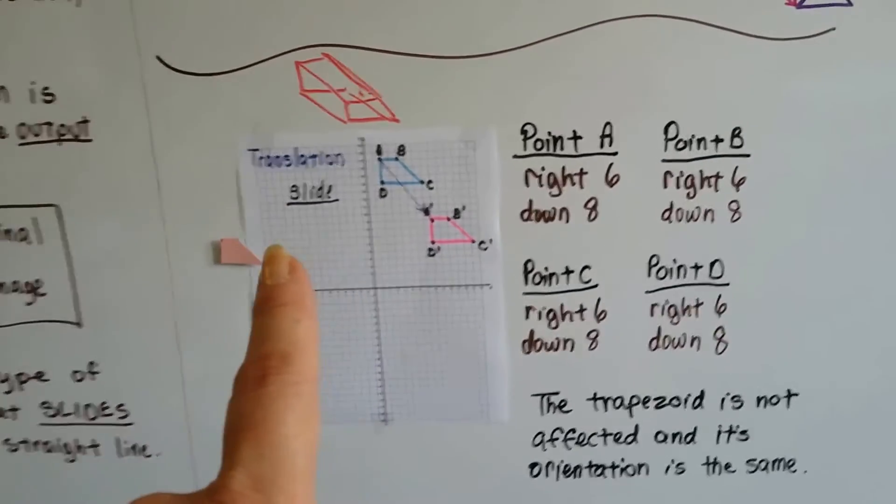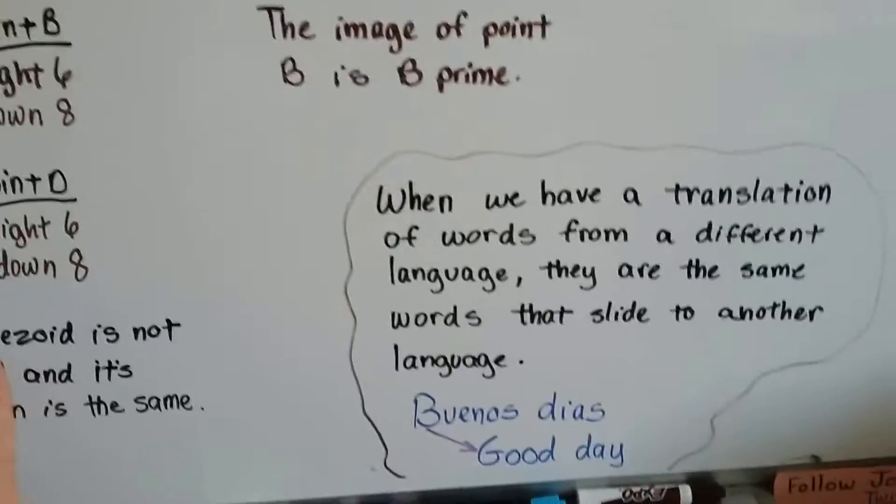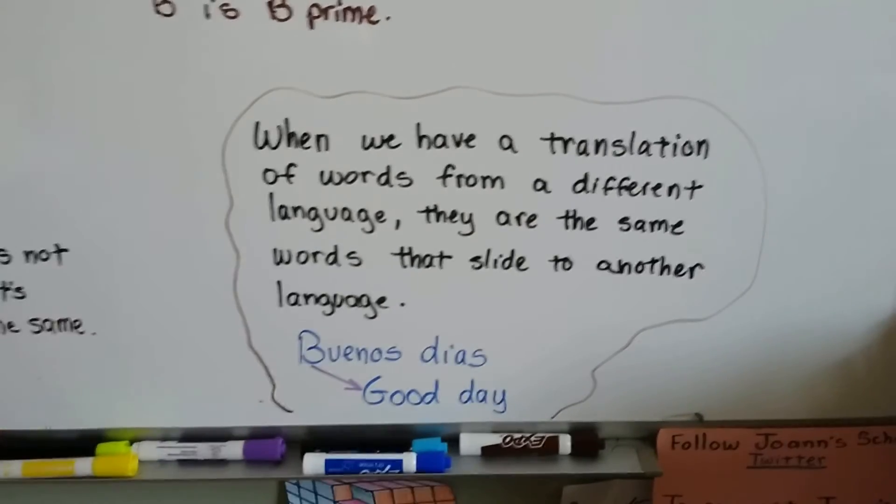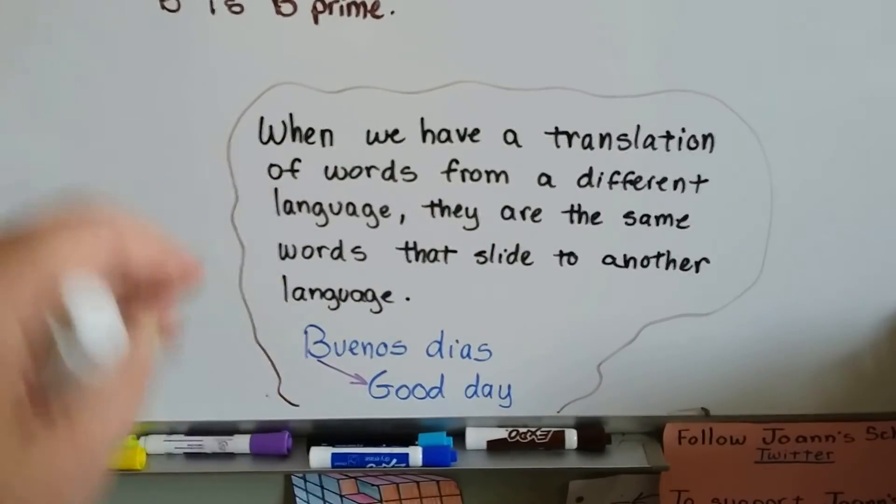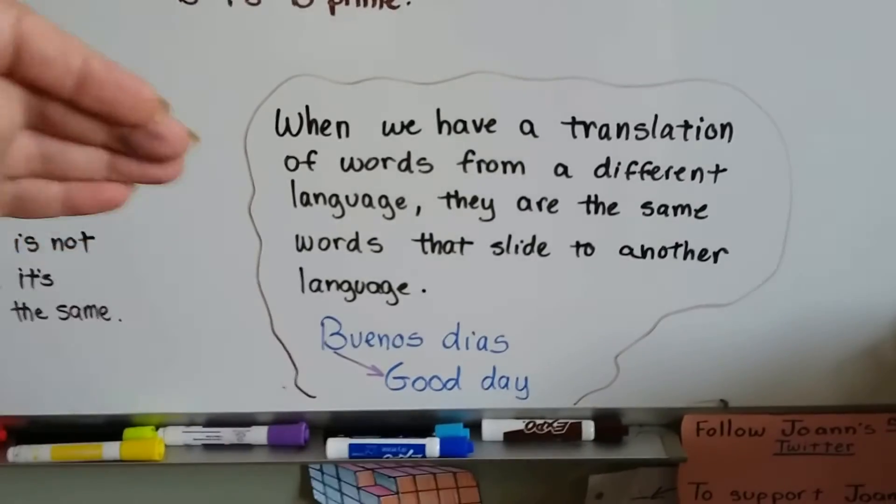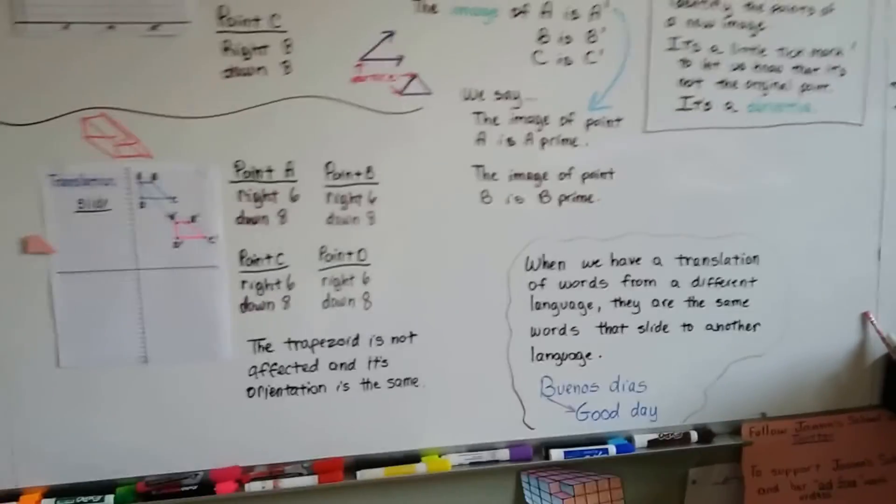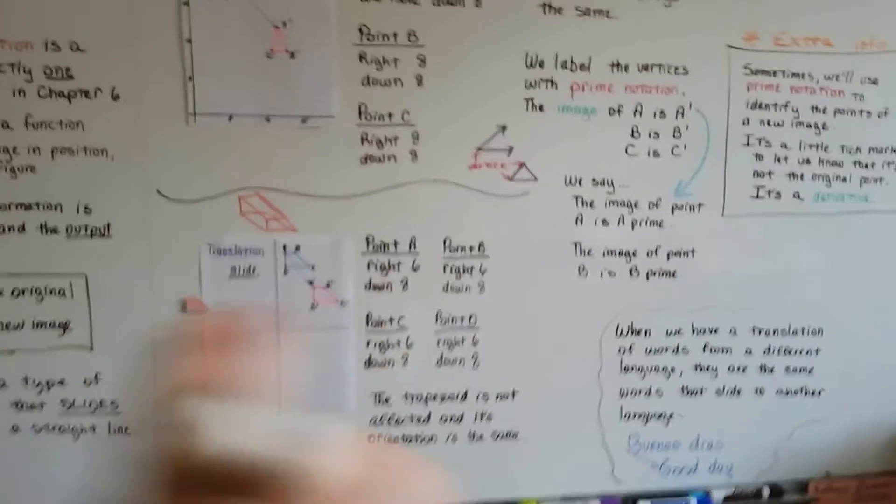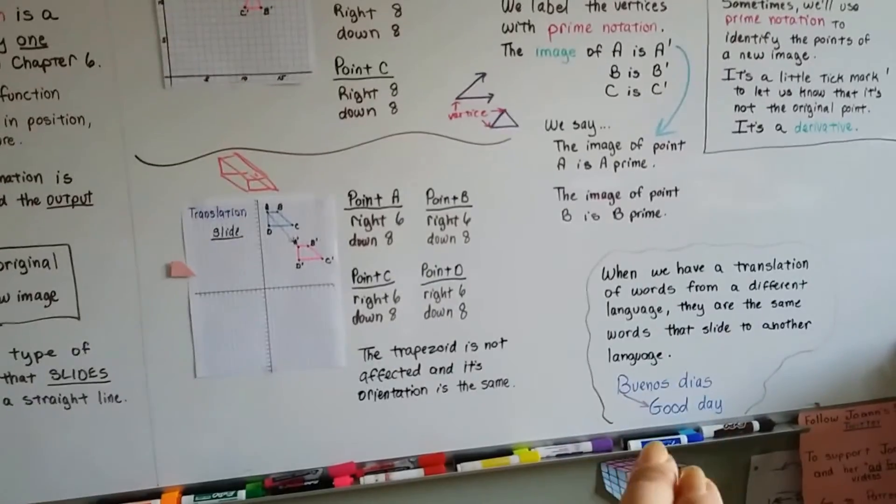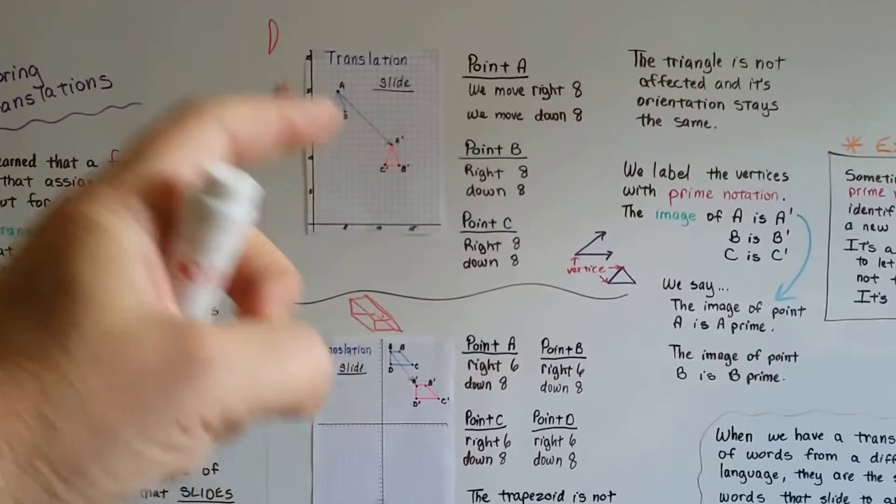So that's a translation. The trapezoid wasn't affected. Its orientation is the same. So think of a translation like, you've heard translations in words. When we have a translation of words from a different language, they're the same words, same meaning. They just slide to another language. Like Spanish, buenos dias, becomes good day. Good day. It just slid into that other language. Even though I know not all language translations are exact, but I wanted to give you an example of the word translation. It slides it to the other language, and the meaning is the same. So we can actually make a 3D figure that way, couldn't we? By connecting those vertices.